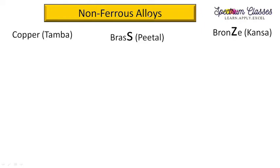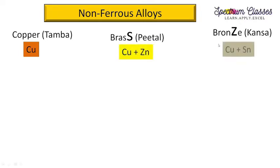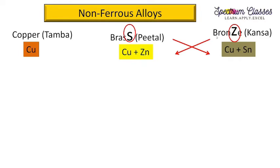Now we come to non-ferrous alloys — this part is very interesting. Copper (Cu) is the base element, and brass and bronze are two important alloys of copper. To memorize their compositions: in 'brass' there is an 's' and in 'bronze' there is a 't'. On cross-referencing, s gives zinc (Zn) and t gives tin (Sn). So brass contains copper and zinc, and bronze contains copper and tin.